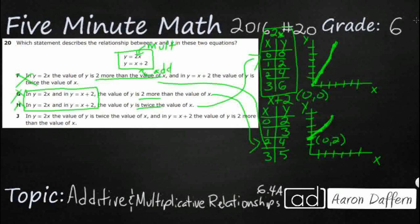So let's look at j. In y equals 2x, the value of y is twice the value of x. Yes. And y equals x plus 2, the value of y is 2 more. Yes, that is correct. And so j is our answer.